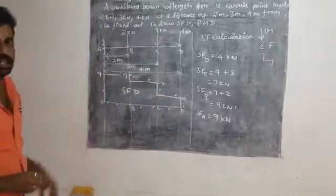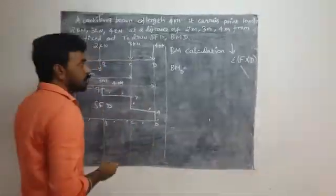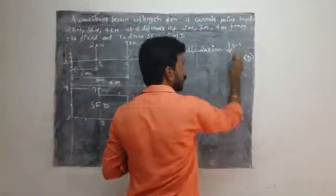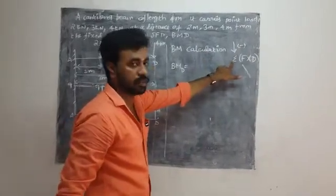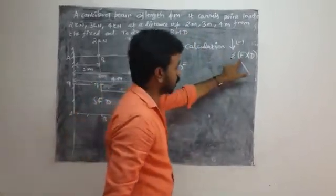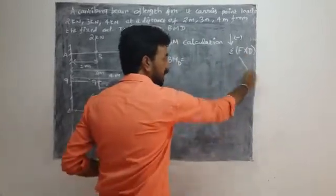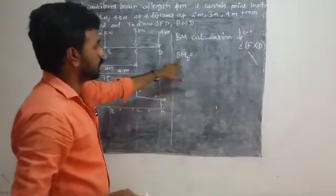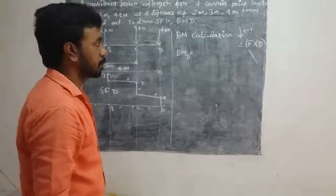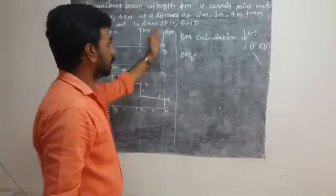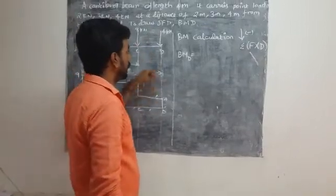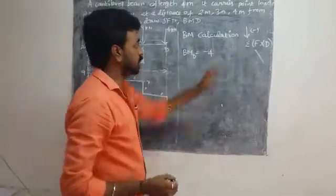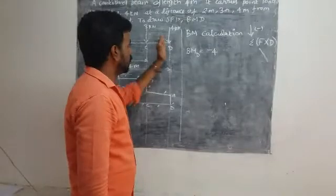This is the SFD diagram. Now the BM (bending moment) calculation. BM calculation is minus — the answer is minus. This is the force multiplied by distance. The bending moment at D is one of the force values — D is minus 4. This is the distance.